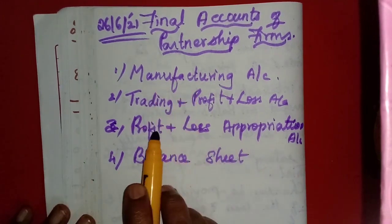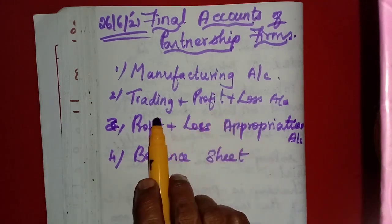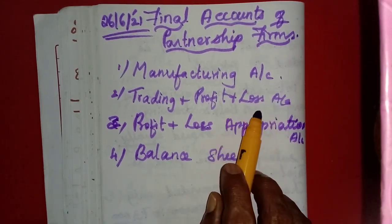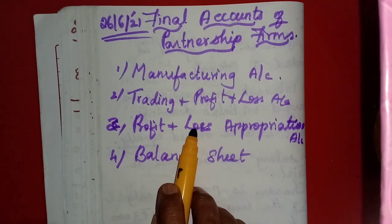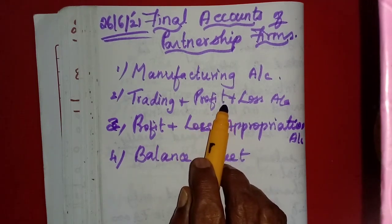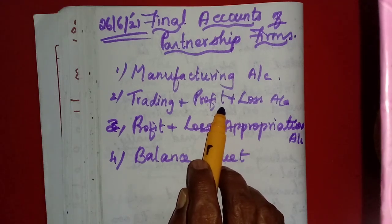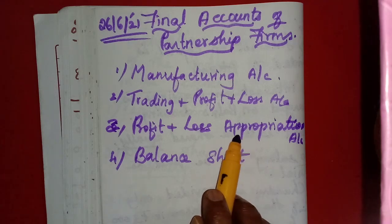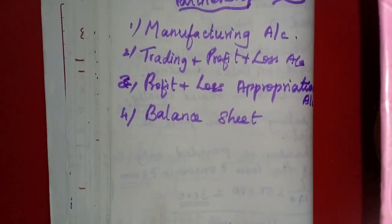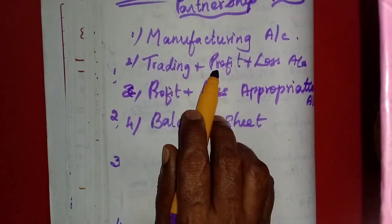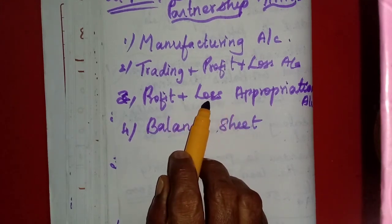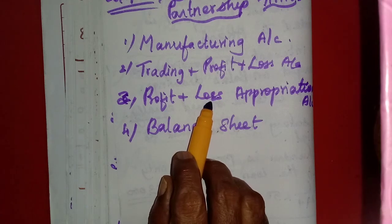The manufacturing account comes first if manufacturing activity is carried on. Then trading and profit and loss account to find out the profit or loss of the partnership firm. And profit and loss appropriation account — here the profit from the P&L account, the share of profit, interest on capital, interest on drawings — all these things will be shown in the profit and loss appropriation account. Otherwise trading and profit and loss account and balance sheet are the same; only the profit and loss appropriation account is the additional one where we will make some of the adjustments.